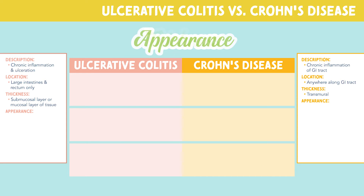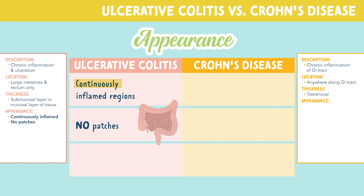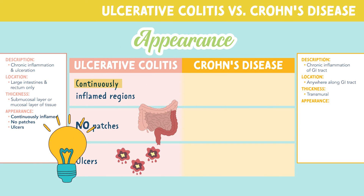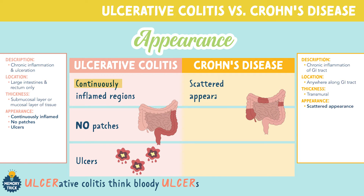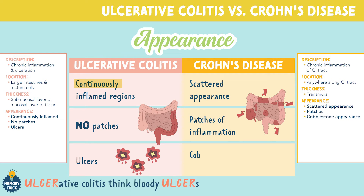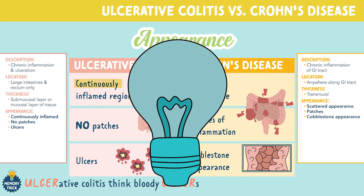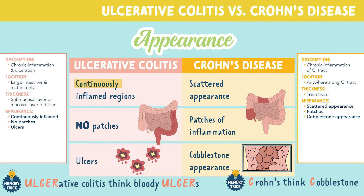Now let's compare the appearance. Ulcerative colitis appears as continuously inflamed regions with no patches. Like the name suggests, in ulcerative colitis we see ulcers — you can remember this by the memory trick: ulcerative colitis, think bloody ulcers. When it comes to Crohn's disease, we see a scattered appearance and patches of inflammation throughout the bowel. These patches create a cobblestone appearance — you can remember this by the memory trick: Crohn's, think cobblestone.